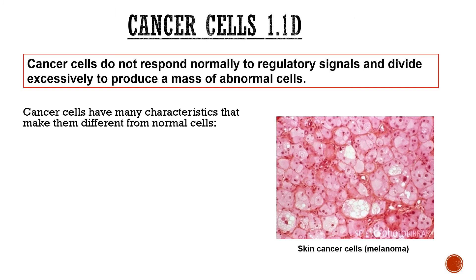Moving on to cancer cells. Normally, cells go through checkpoints during mitosis — division doesn't just happen freely. Think of it like flying to America: you don't just turn up, you go through airport security and customs at both ends. Cancer cells do not listen to those checkpoints; they divide excessively to produce a mass of abnormal cells. These characteristics make cancer cells different from normal somatic cells.